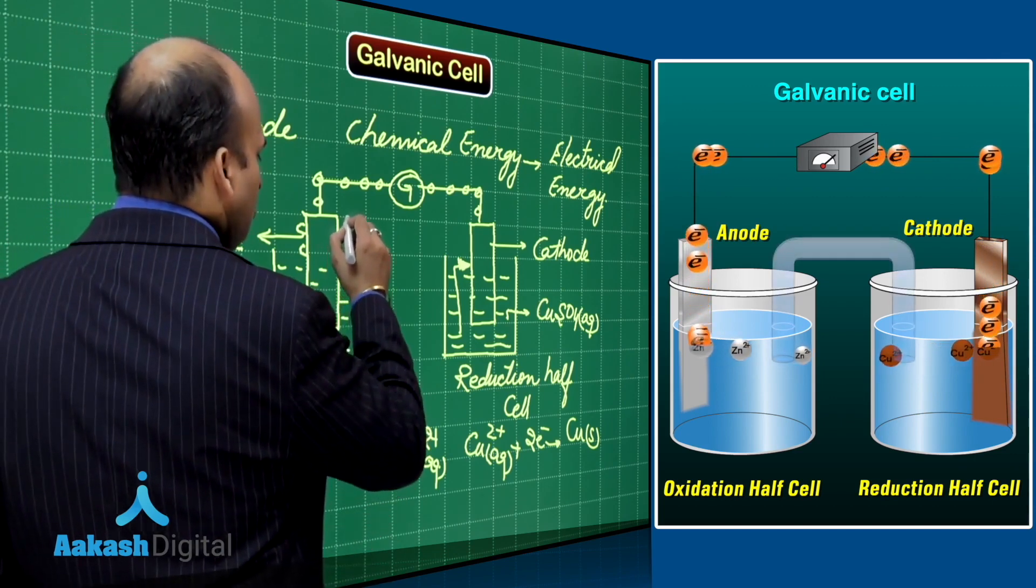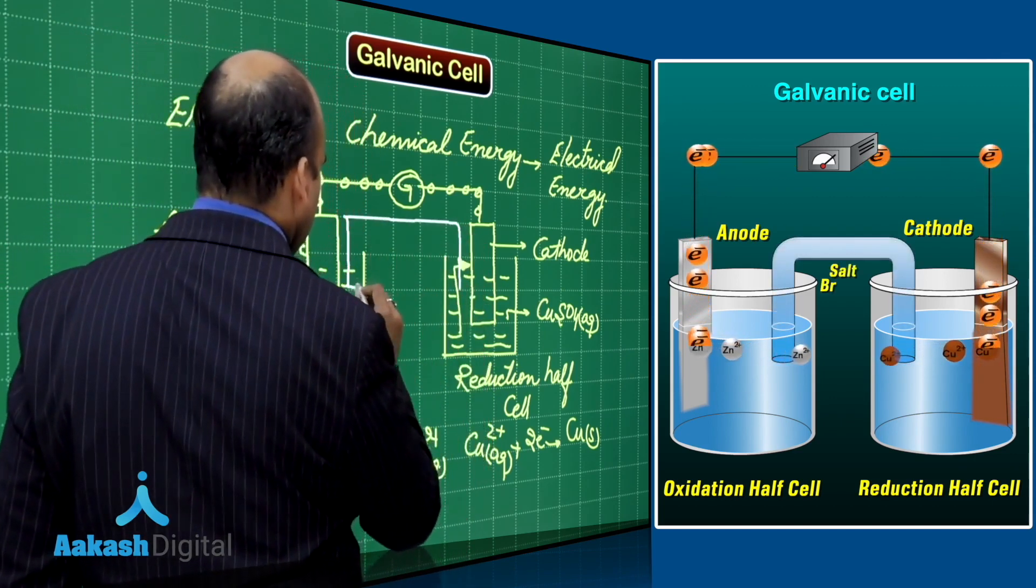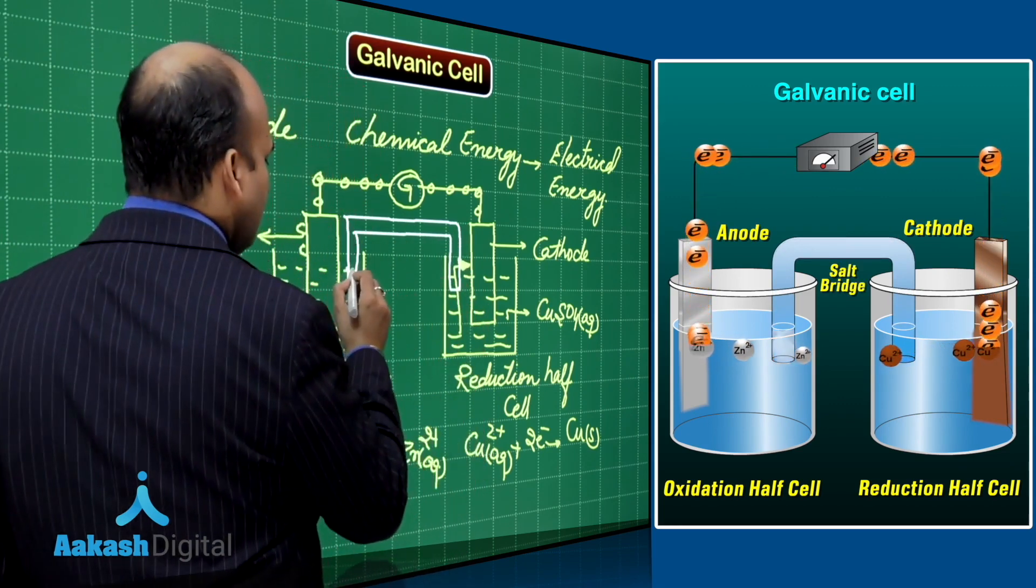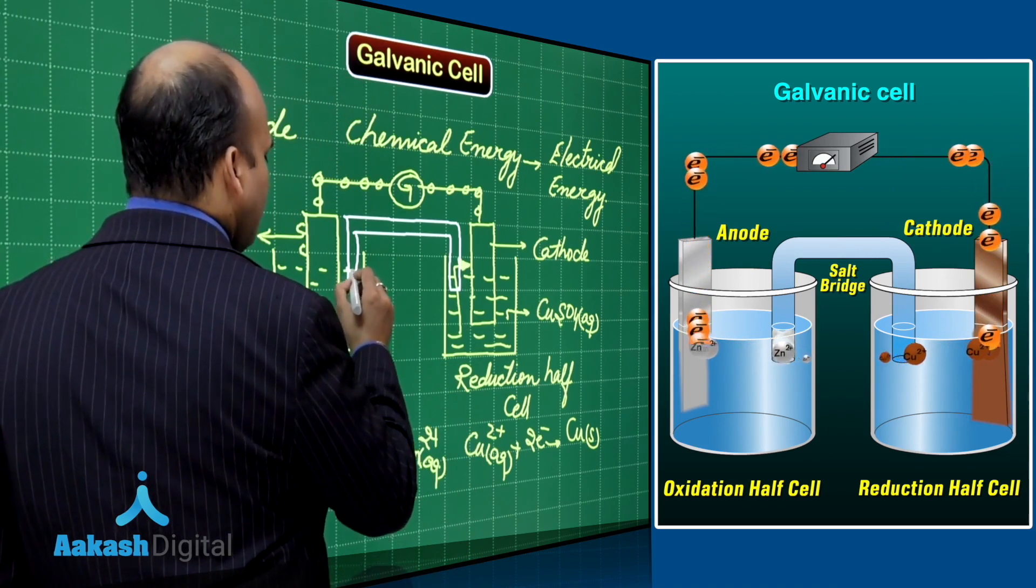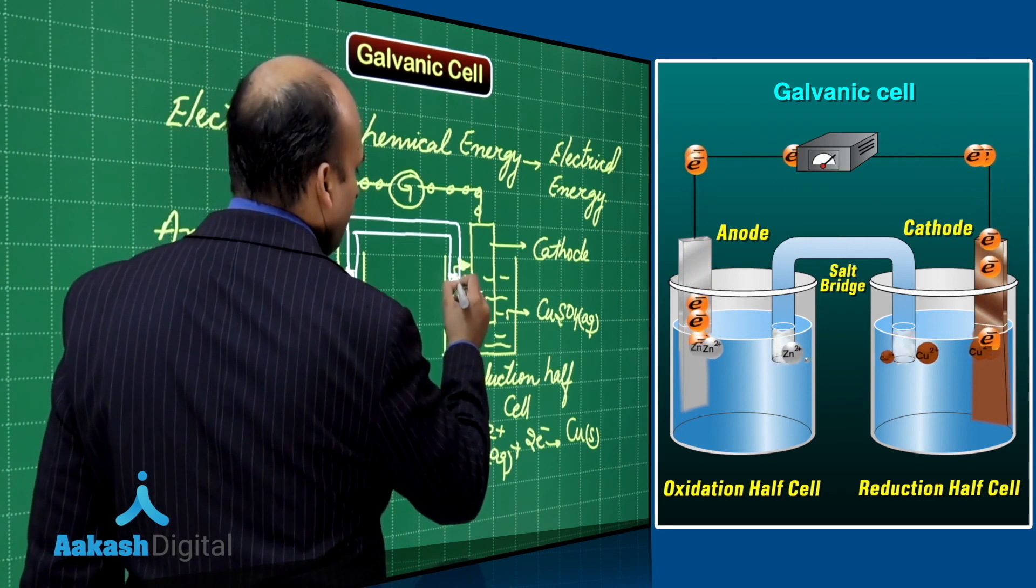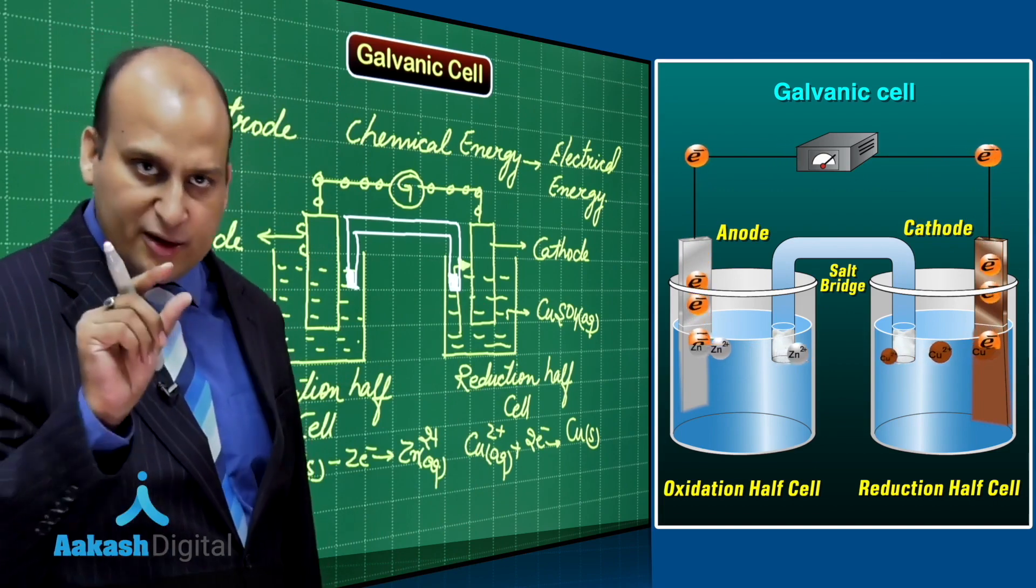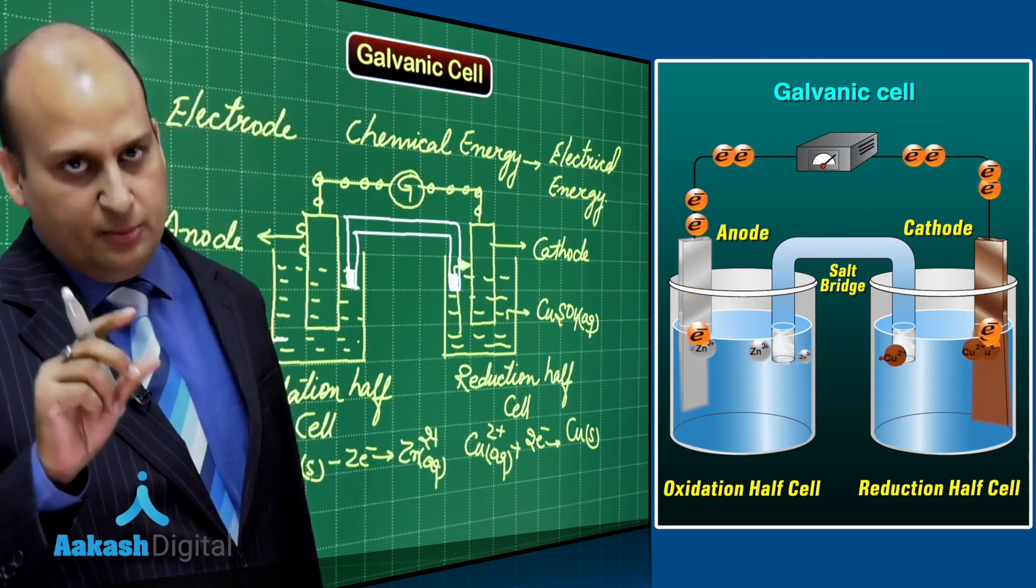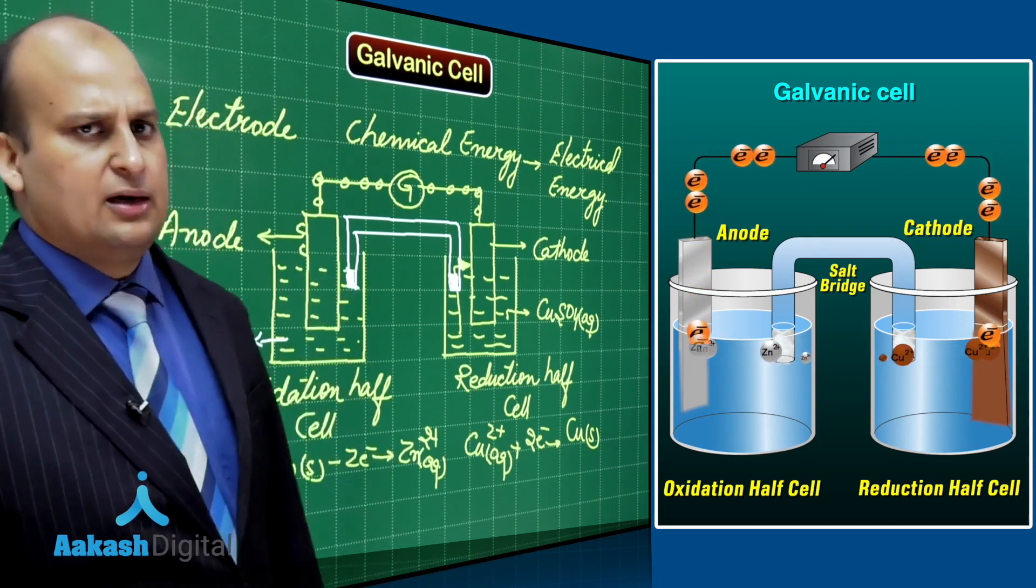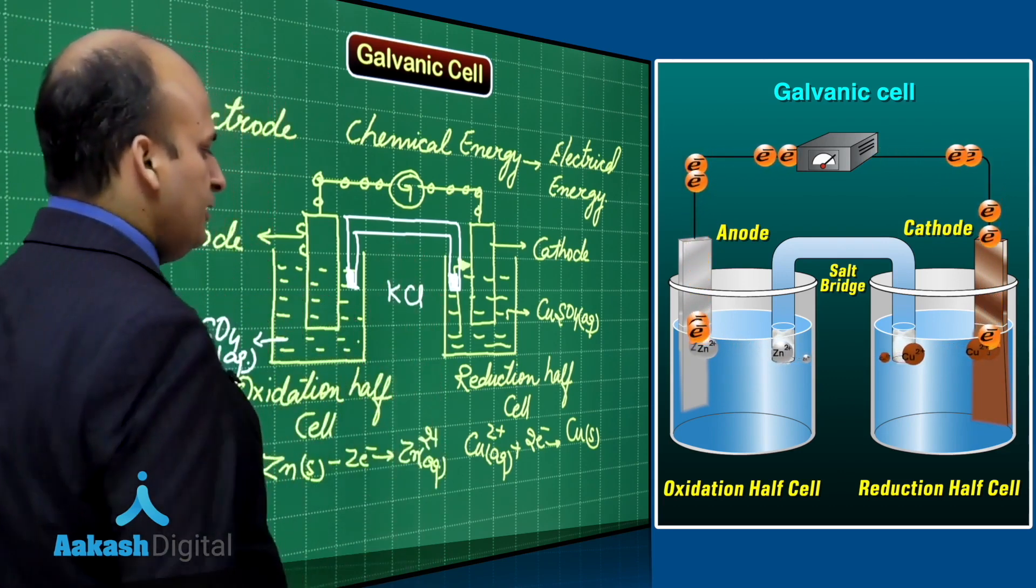That is done by using salt bridge. It is an inverted U tube, please remember, which is closed at both the end by porous plugs. Porous plugs are like the moist cotton, which we can fix up over there. It should be moist, so charges can flow across. It contains agar-agar gel in which electrolytes like KCl are present.